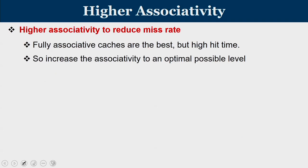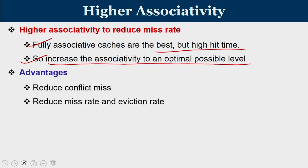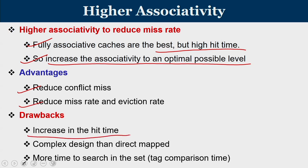The third approach to reduce miss rate is going for higher associativity. Fully associative caches are the best, but they take more hit time because you have to search all ways to find where a hit occurs and extract the appropriate data. The best approach is not to stick with a direct-mapped cache, which has many conflict misses, but to increase associativity to an optimal level. Higher associativity reduces conflict misses, reduces miss rate and eviction rate, but the extra multiplexer circuitry increases hit time.